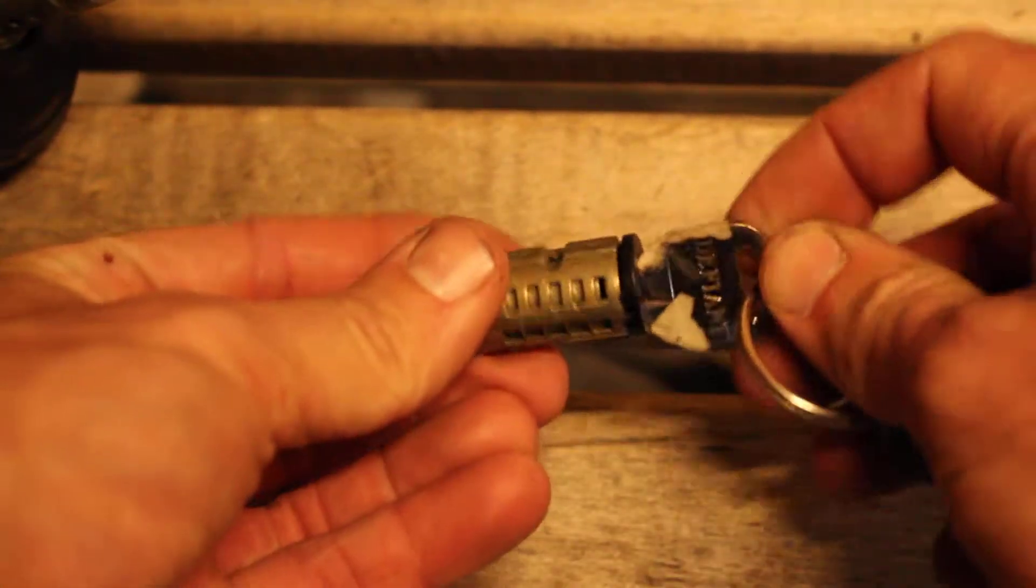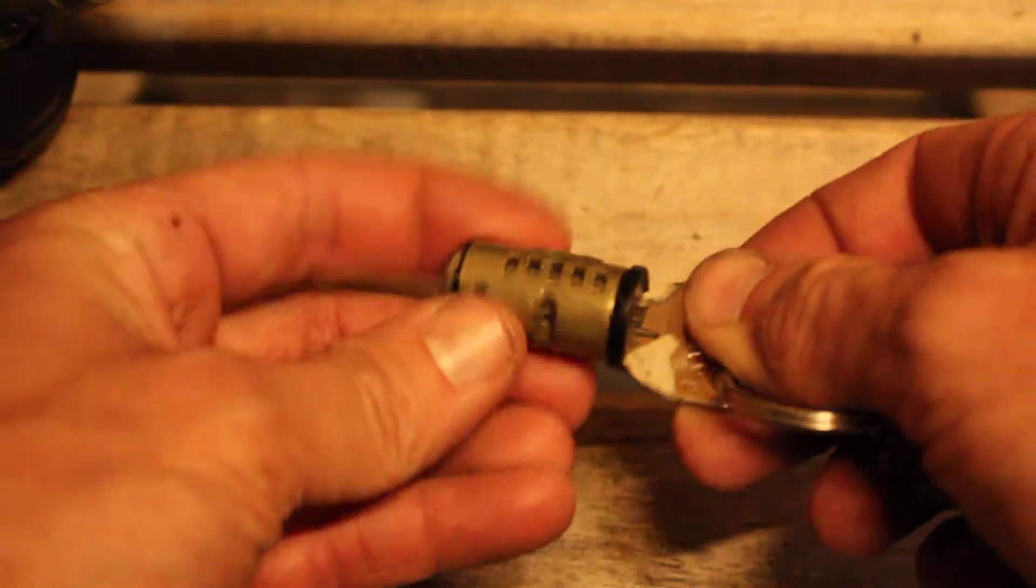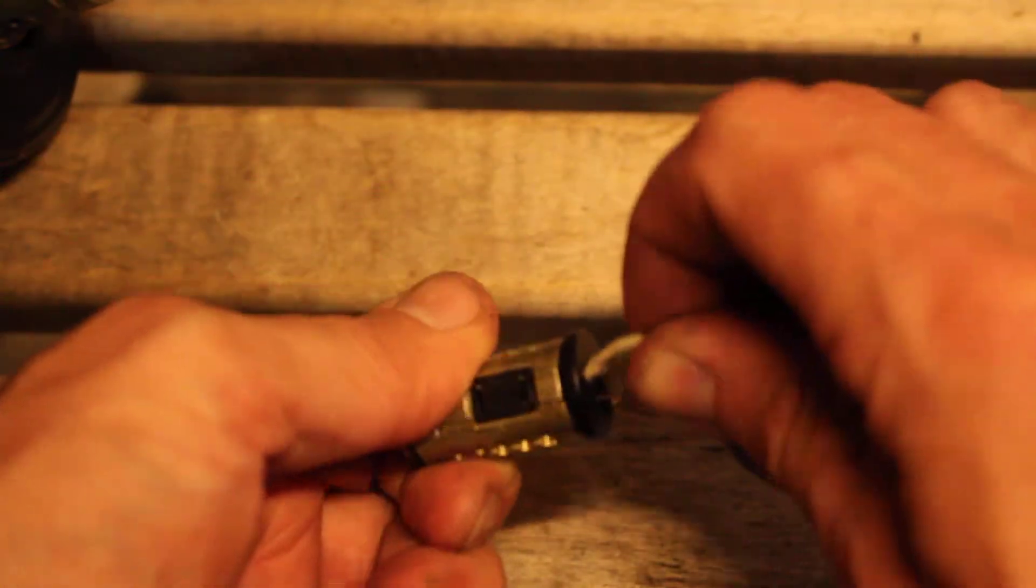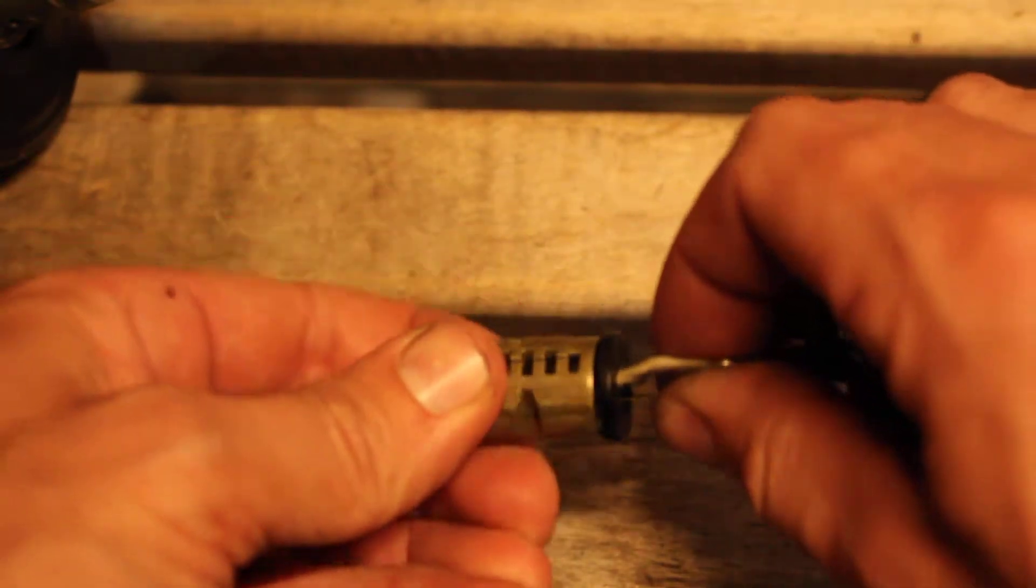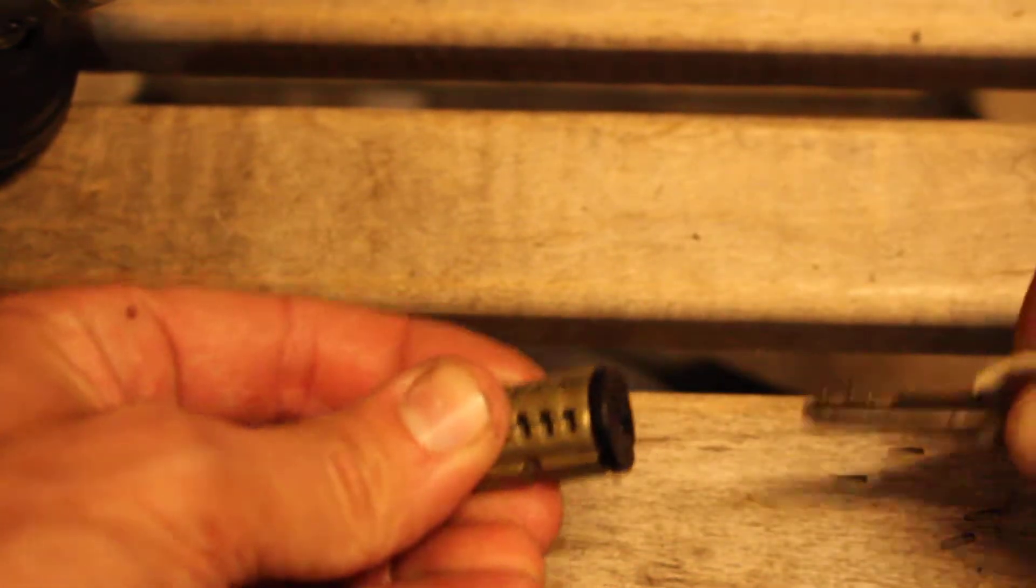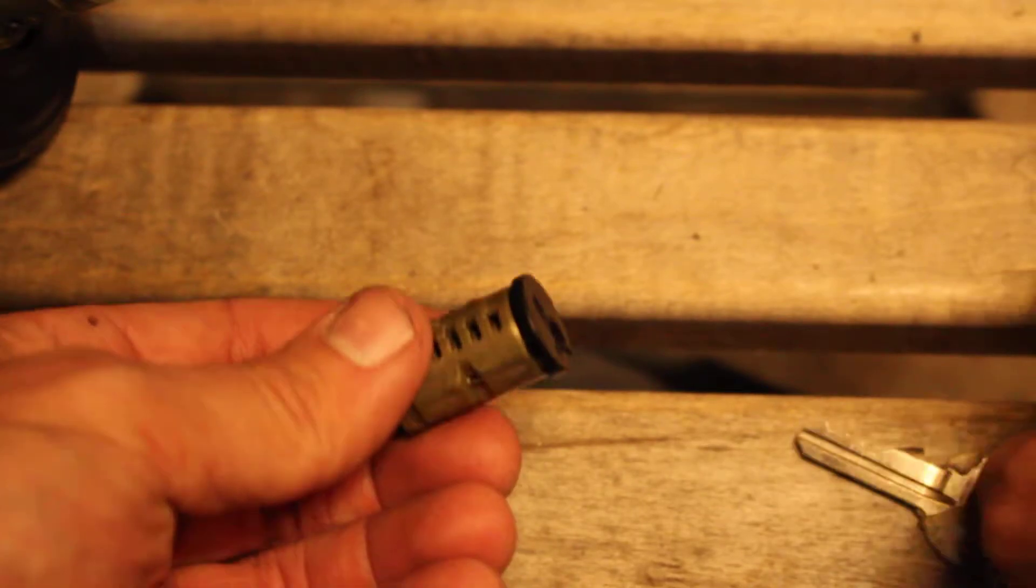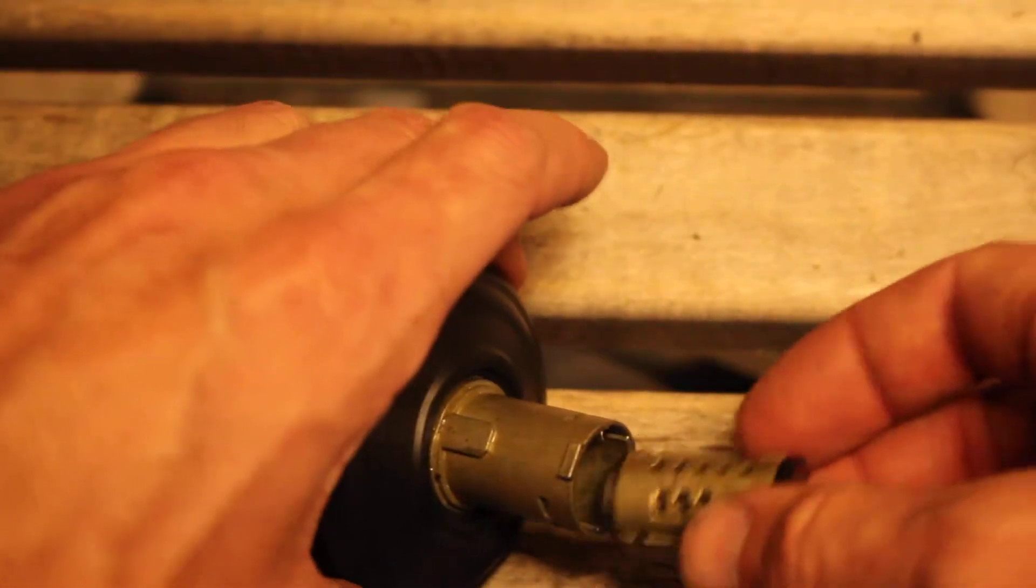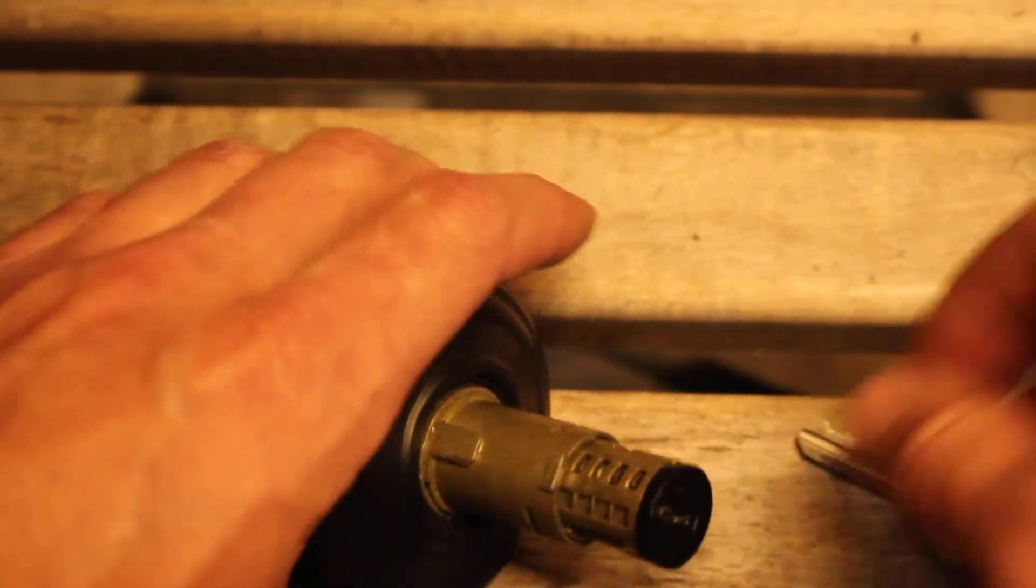Make sure the key is all the way in and then you're good. Turns no problem. Right here is where it was keyed at. Right here is where it will come out. There you go, that easy. Put it back in your lock, put everything together, and you're good to go. Thanks for watching.